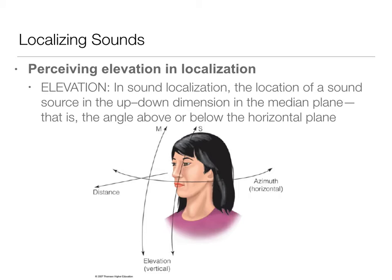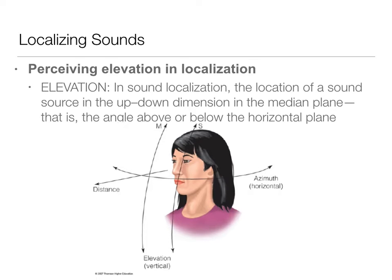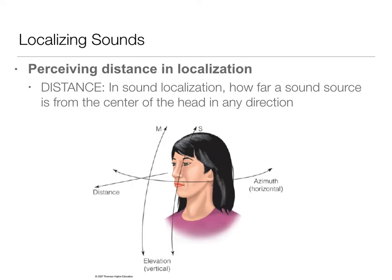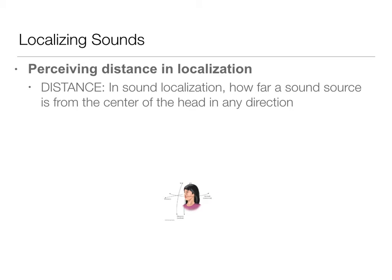Elevation is the second dimension — is the sound above us or below us? This is talking about where the sound is coming from in a vertical sense. The third dimension is distance: how far that sound source is from your head in any direction — really close or really far away. Those are the three dimensions we use to localize sound, and we process them differently.